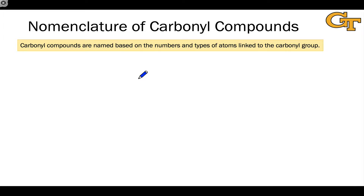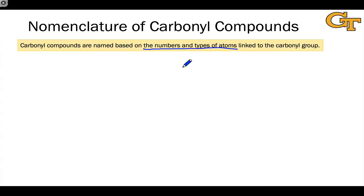Carbonyl compounds exhibit great structural diversity, and they differ primarily on the numbers and types of atoms linked to the carbonyl group. Different types of atoms and different elements will be linked, and different numbers of different types of elements will be linked to the carbonyl group, and we name and classify carbonyl compounds on this basis.